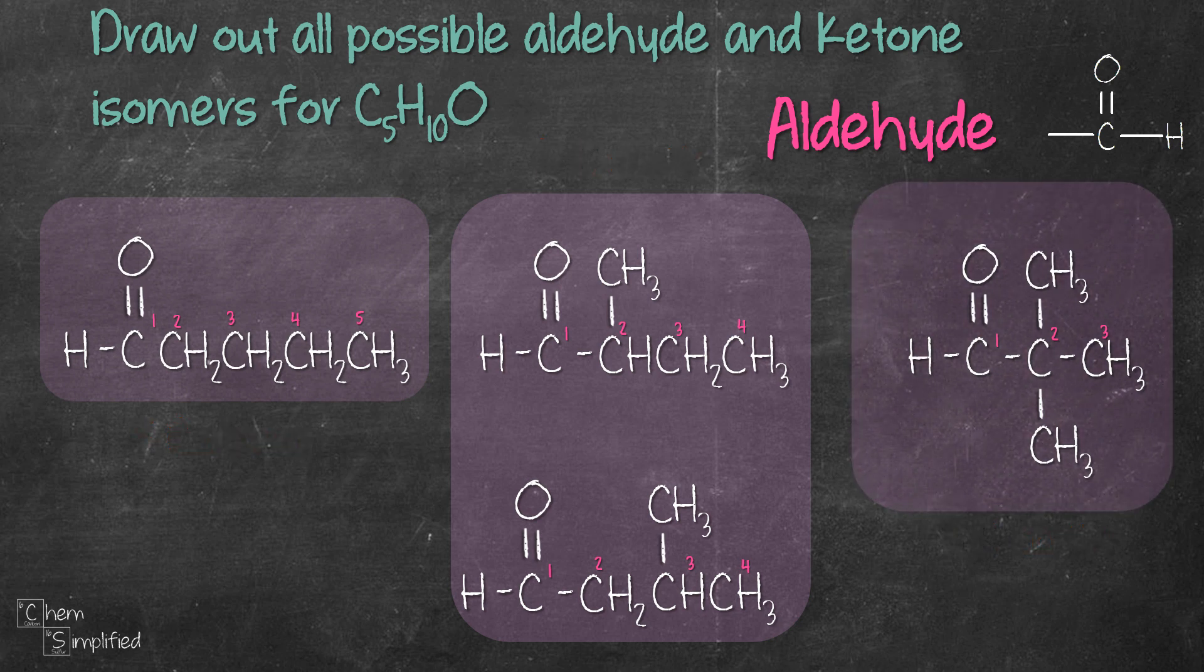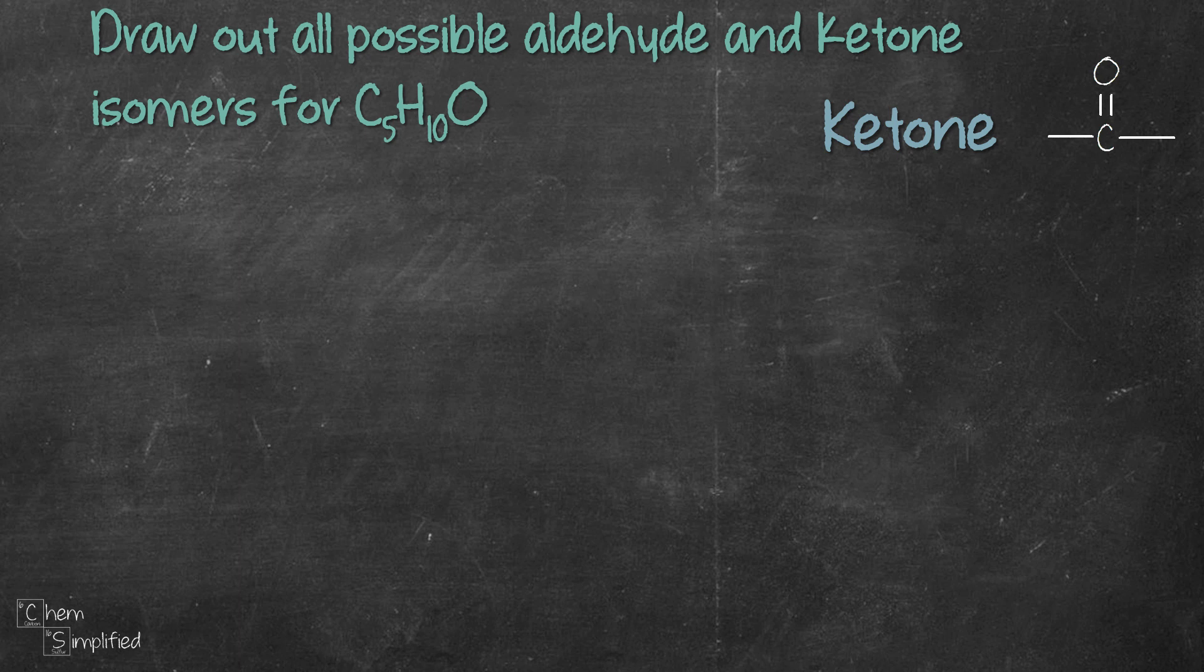Now let's move on to ketone. Let's start by placing the carbonyl group sandwiched by two carbons. Since we're dealing with five carbons let's place the remaining two carbons straight in a row like this and that will give us a five carbon chain ketone with carbonyl group at C2.